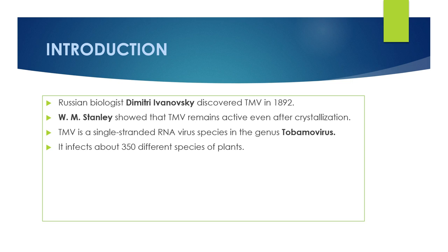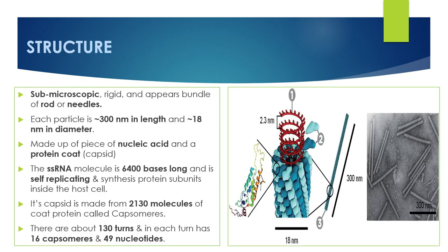TMV is a single-stranded RNA virus species in the genus Tobamovirus that infects a wide range of plants, especially tobacco and other members of the family Solanaceae. It infects about 350 different species of plants.